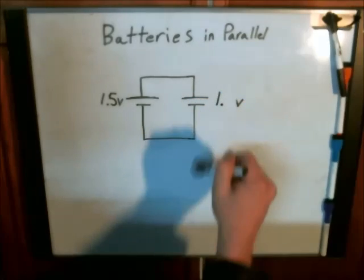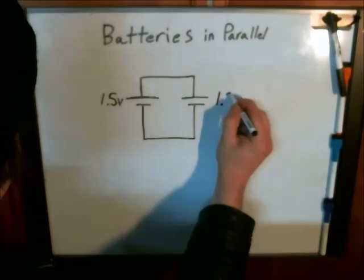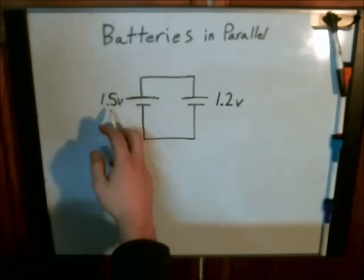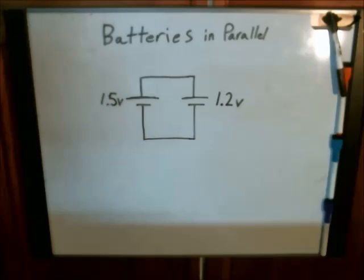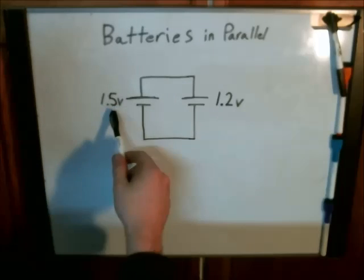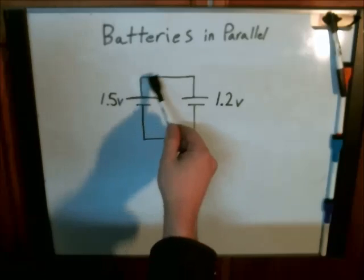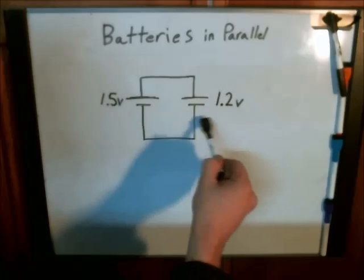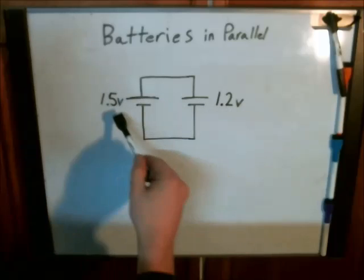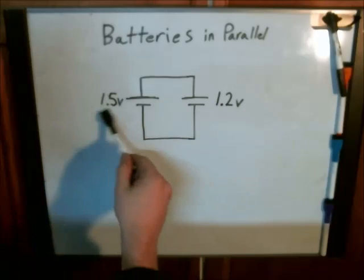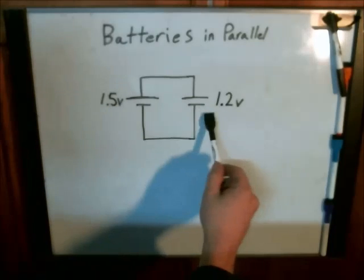Now let's say you put a rechargeable battery in parallel with a primary battery. So there's a 0.3 volt difference there. What's going to happen is current's going to flow into this battery to charge it up to the same potential. So you're going to lose a little bit of potential here because it's draining itself and you're going to gain some here.